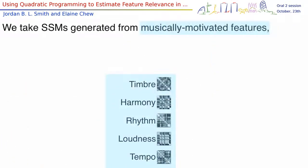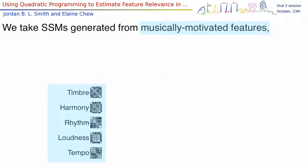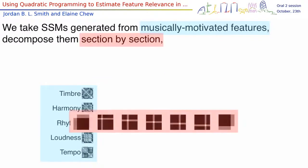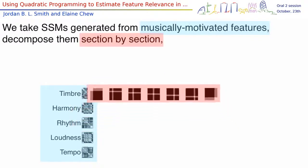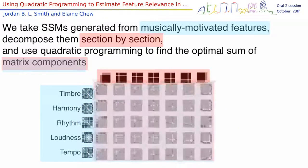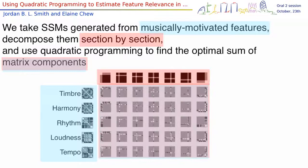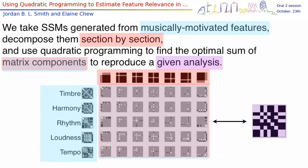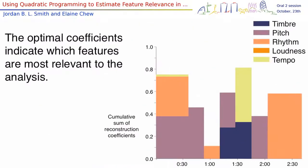We take SSMs generated from musically-motivated features, decompose them section by section, and use quadratic programming to find the optimal sum of matrix components to reproduce a given analysis. The optimal coefficients indicate which features are most relevant to the analysis.